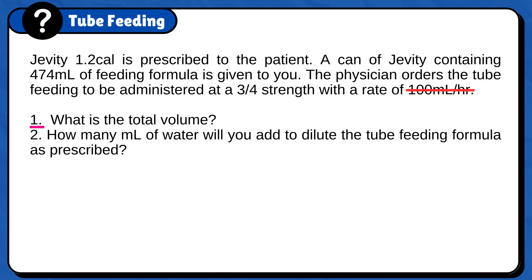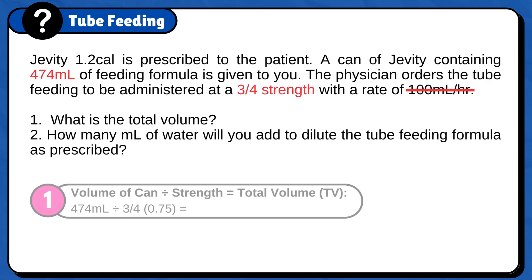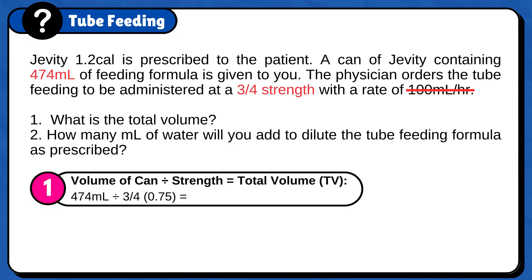The first question is asking about the total volume. To answer it, you just need to divide the volume of the can by the strength to get the total volume. 474 ml divided by ¾ (or 0.75) is 632 ml. Therefore, 632 ml is the total volume.